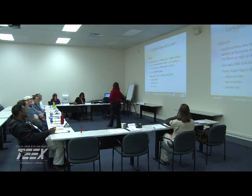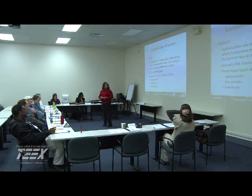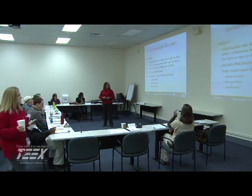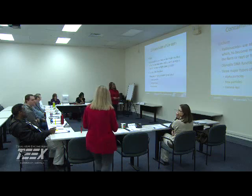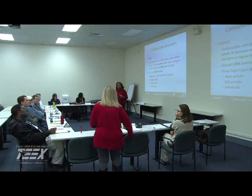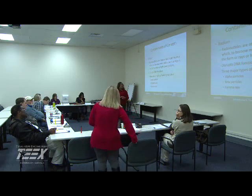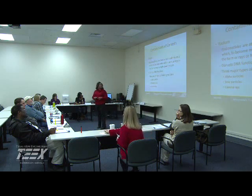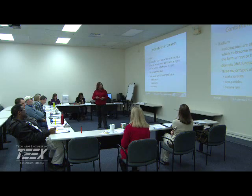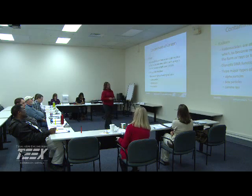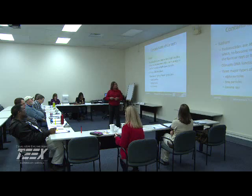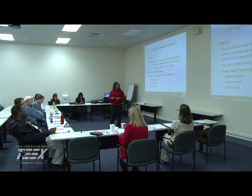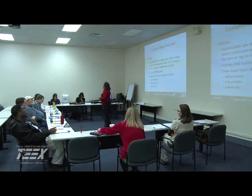Other contaminants of concern would be radionuclides. Radionuclides are atoms with an unstable nucleus which, in order to become more stable, emit energy in the form of high-energy rays or high-speed particles, which are of some concern. Ultimately, it can disrupt the DNA function. The major types of ionizing radiation are alpha particles, beta particles, and gamma rays.